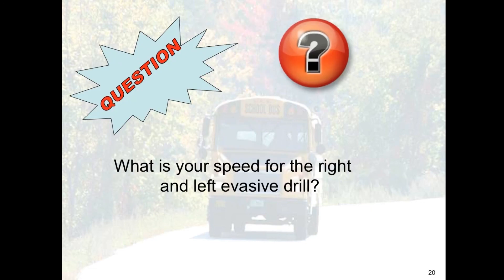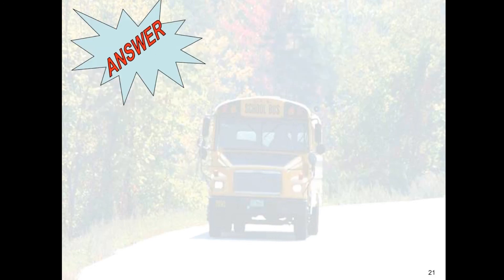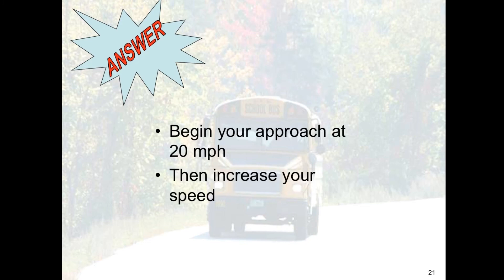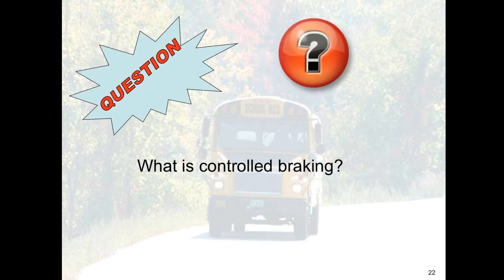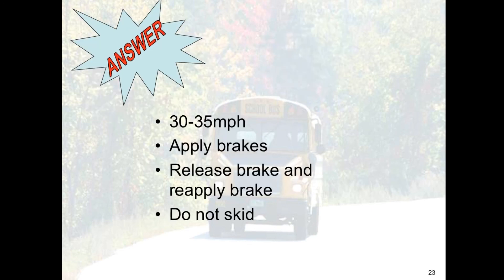Let's do a quick review of our advanced skills. What is your speed for the right and left evasive drill? Begin your approach at 20 miles an hour. What is controlled braking? This is where you accelerate to 30 to 35 miles an hour, apply the brakes sharply, release and reapply if necessary, and do not skid.